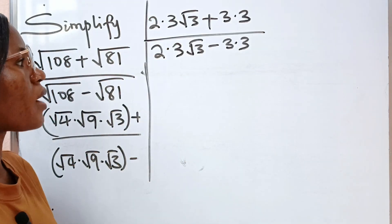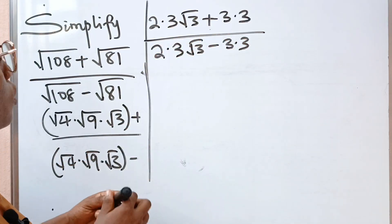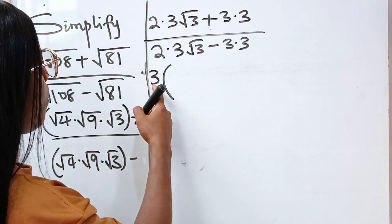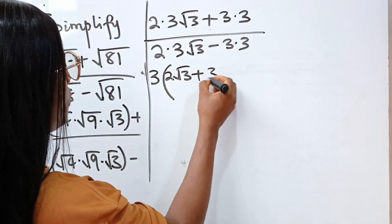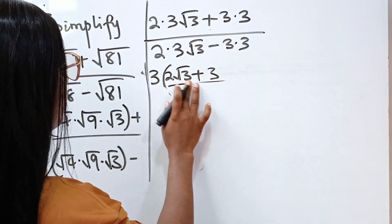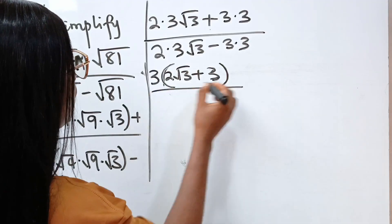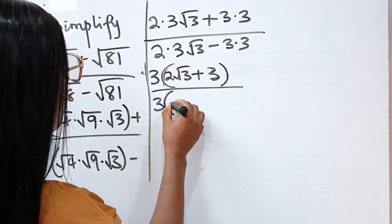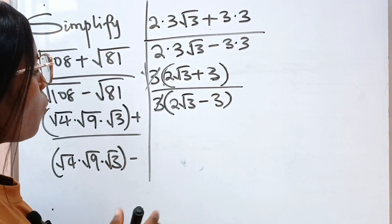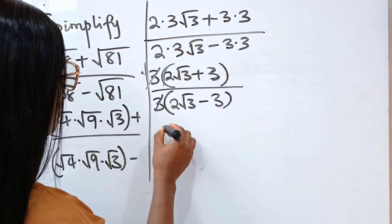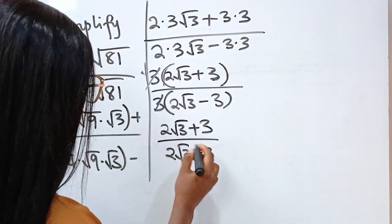Now let's look out for common factors. This and this have 3 in common, so we bring that out. When divided by 3, 2 root 3 will remain. Plus, when divided, 3 will remain. Divided by, bringing out 3 from the denominator as well, we have 2 root 3 minus 3. So 3 divides itself to give 1, and what we now have left is 2 root 3 plus 3 divided by 2 root 3 minus 3.